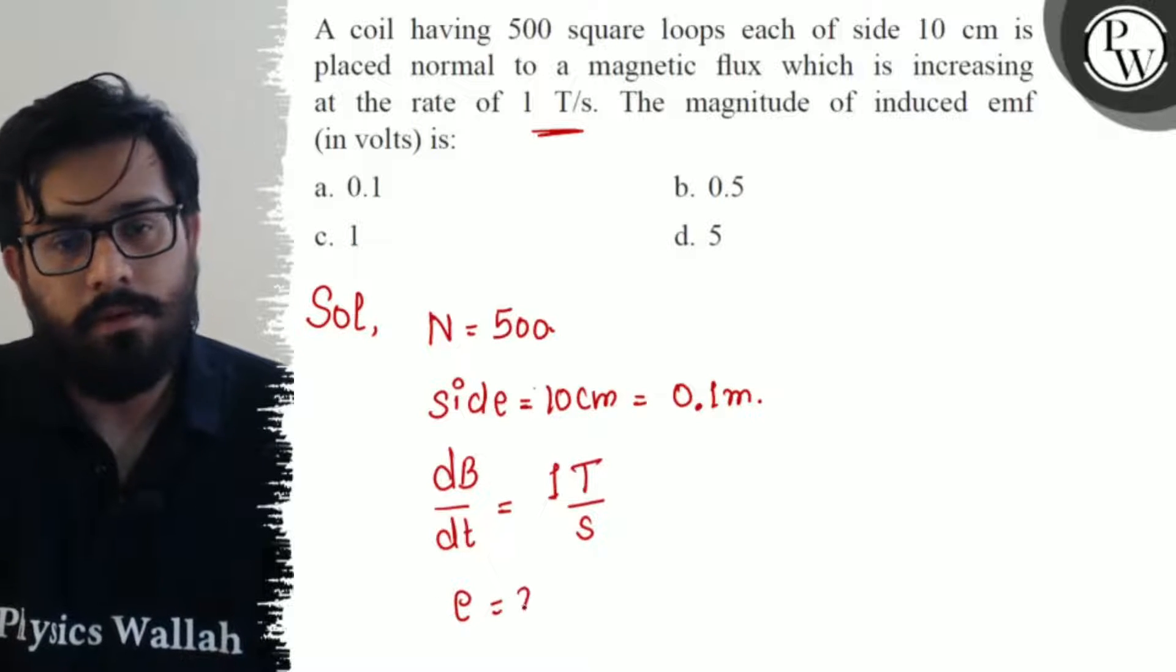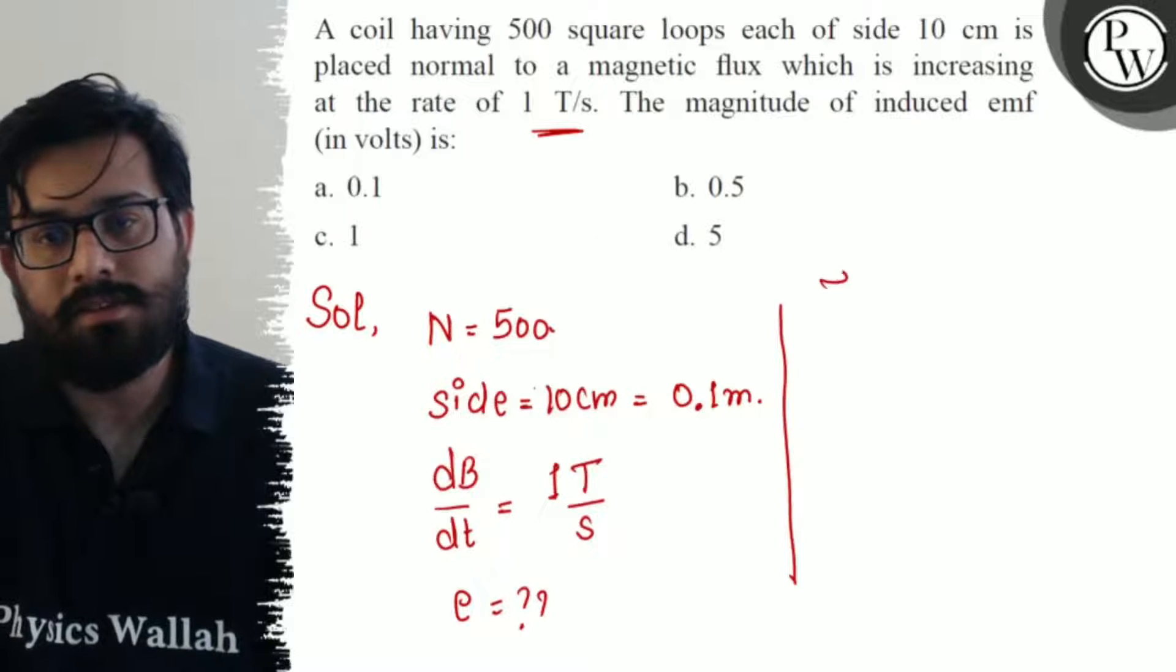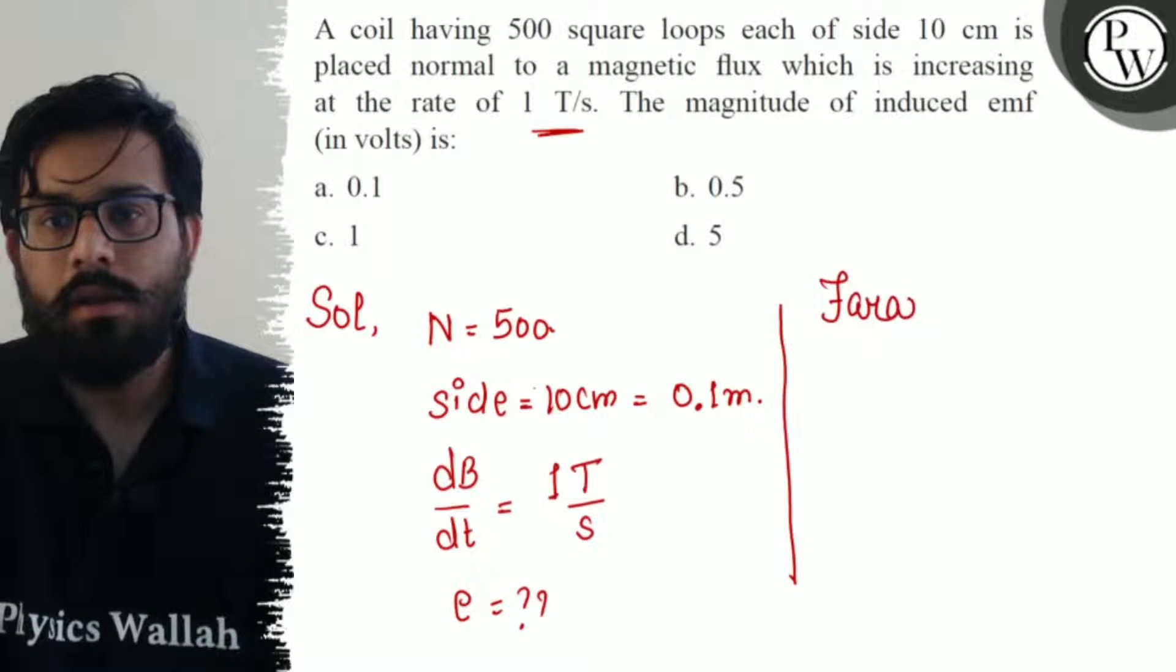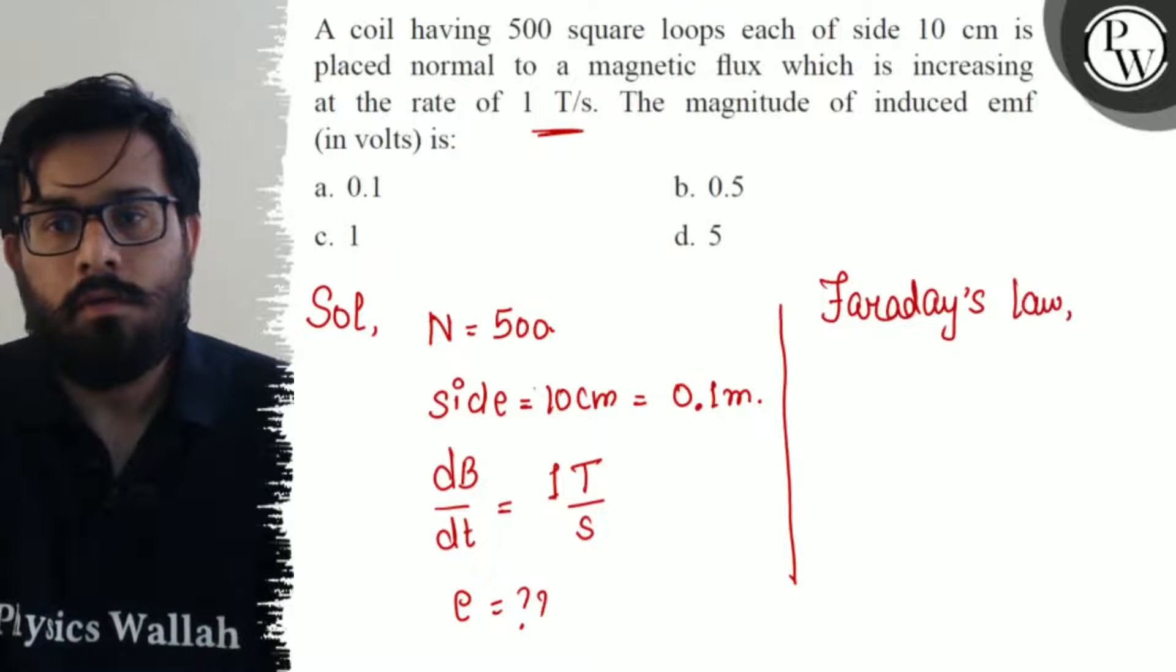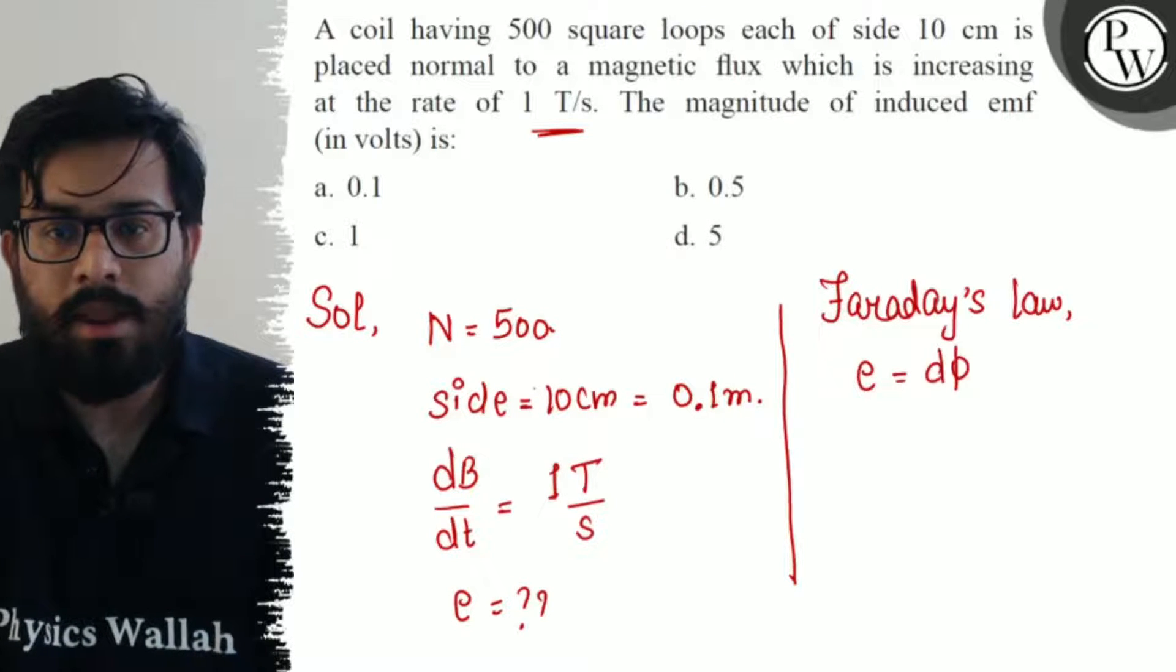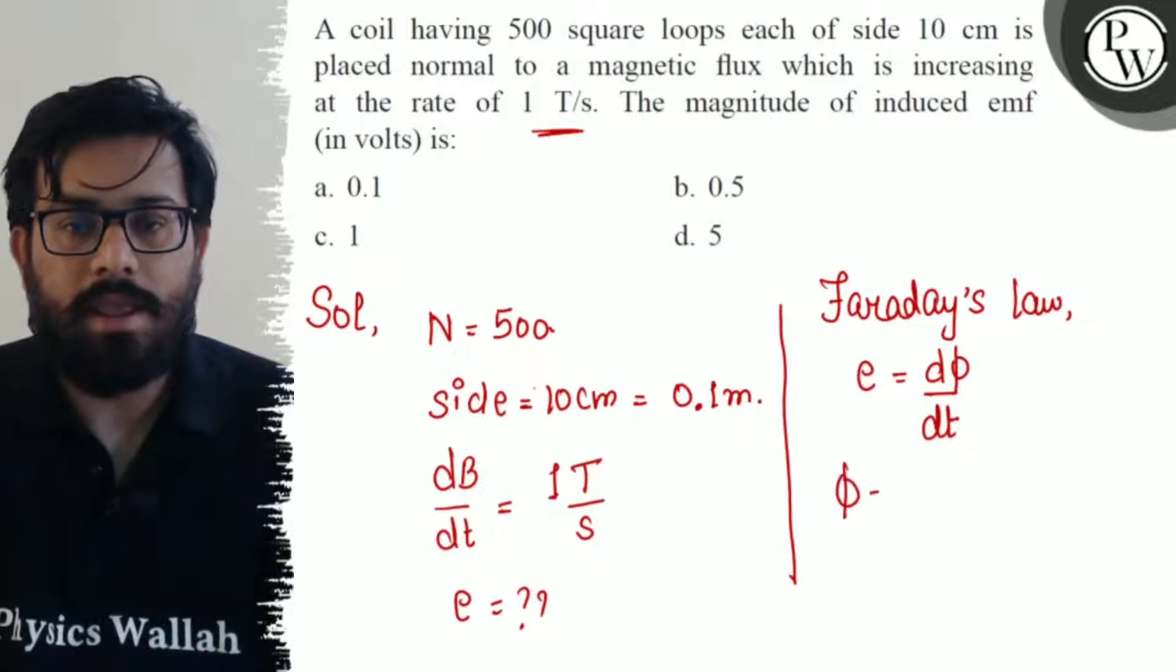Now using Faraday's law, we have induced EMF equals dφ/dt. Now φ is NBA, the number of turns times magnetic field times area of cross-section.